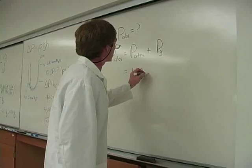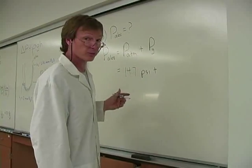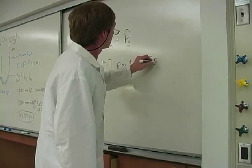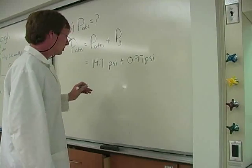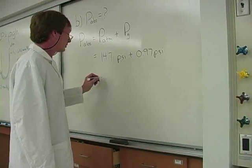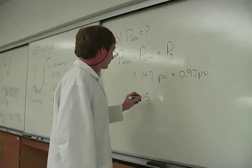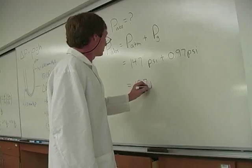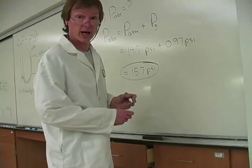So that's 14.7 PSI plus, this is positive, positive pressure, 0.97 PSI. That's about 1 PSI to the nearest tenth. So that would be, let's see, 0.67. It would round up to 15.7 PSI. It would be a little bit higher.